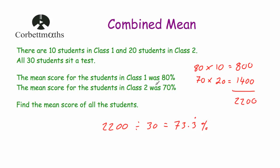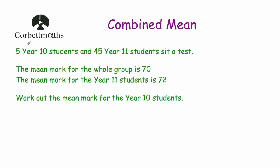So as you can see, to find the combined mean, what we do is we multiply the mean for one of the groups by the number in that group, we times the mean in the other group by the number of values in that group, and we add them together to get the grand total and then divide by the total number of values. Let's have a look at our last example, and it's a little bit different.